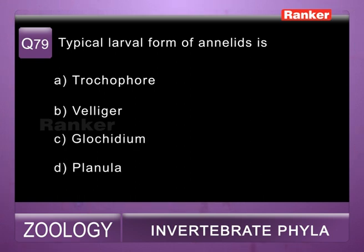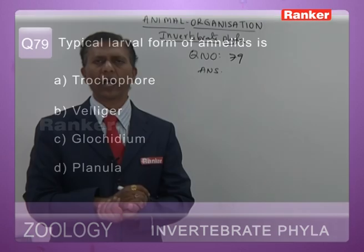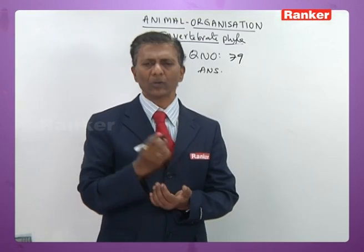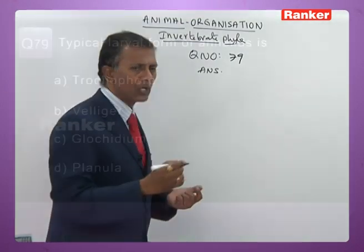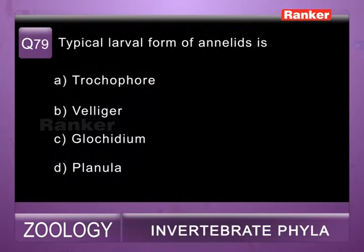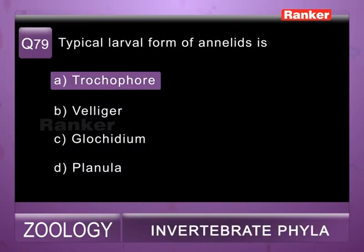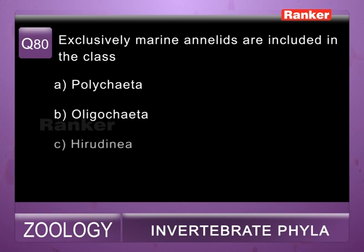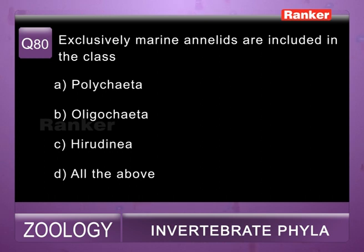Question seventy-nine: typical larva of Annelida is — a) trochophore, b) veliger, c) glochidium, d) planula. The characteristic larva of annelids is called trochophore. So seventy-ninth question correct answer is a. Question eighty: exclusively marine annelids are included in — a) Polychaeta, b) Oligochaeta, c) Hirudinea, d) all of the above. Most polychaetes — nearly 99% — are marine animals. So eightieth question correct answer is a) Polychaeta.